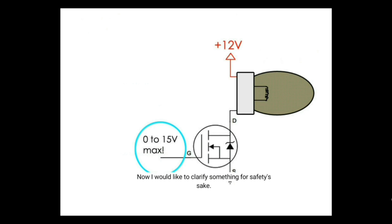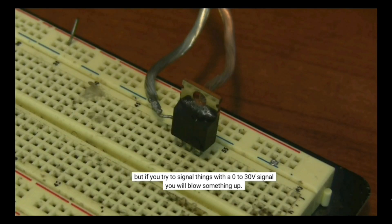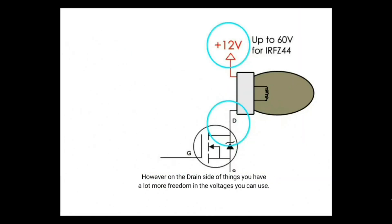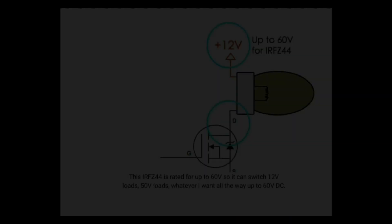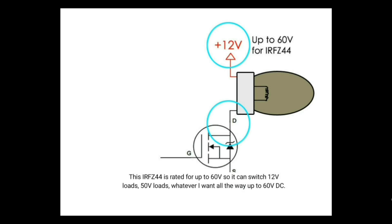Now, I would like to clarify something for safety's sake. Over here, on the gate side, you want to keep the signaling voltages less than 15 volts. 0 to 5 volts is fine, 0 to 12 volts is fine. But if you try to signal things with 0 to 30 volts, you will blow something up. However, on the drain side of things, you have a lot more freedom in the voltages you can use. The only limitation is what the transistor can handle. This N MOSFET is rated for up to 60 volts.